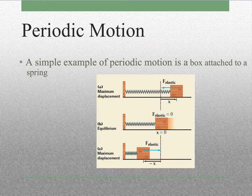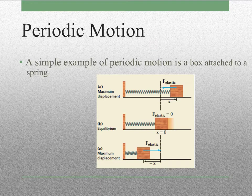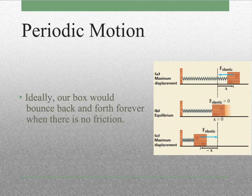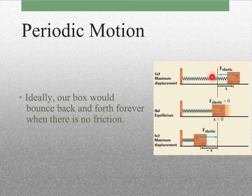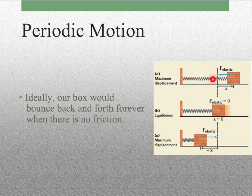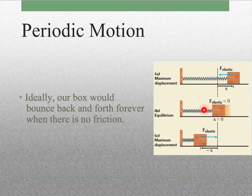So a simple example that we are going to start with as we look at periodic motion more carefully is a box attached to a spring. So ideally here we've got this box that's attached to a spring. And if we pull it out, we know that there will be an elastic force pushing back, pulling the box this way. And it would keep moving past that point and compress the spring a little bit, and then bounce back this way.